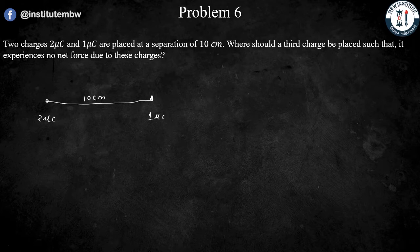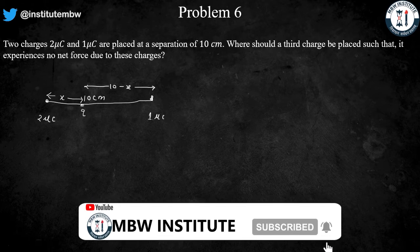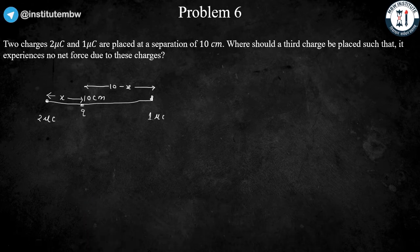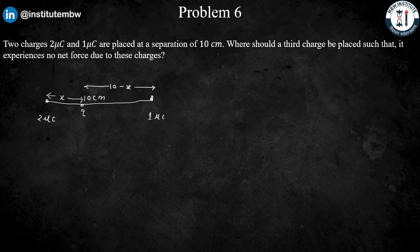Where should a third charge be placed such that it experiences no net force due to these charges? So let's say I am assuming the magnitude of the third charge is Q and it is placed x distance from 2μC. The distance from 1μC will be 10 minus x. We have to place it in such a way that it experiences no force. Let's say the force on charge Q due to 1μC is F1 and I am assuming Q is positive. You can assume it either positive or negative, it doesn't matter, but for now I am assuming it is positive.